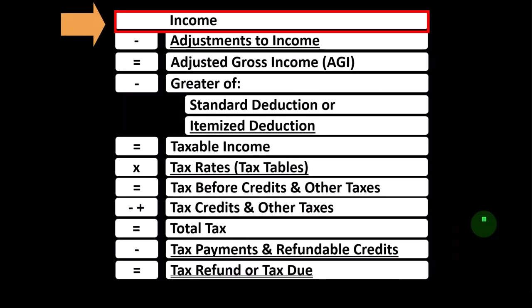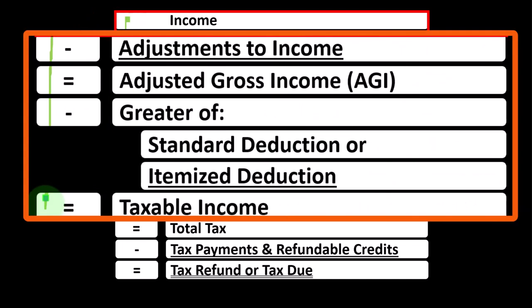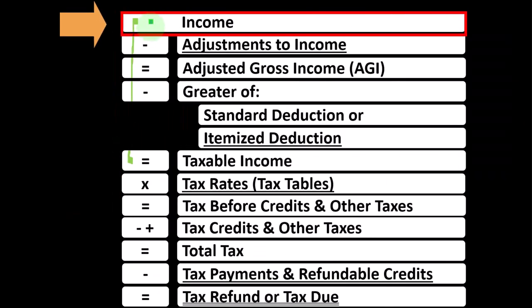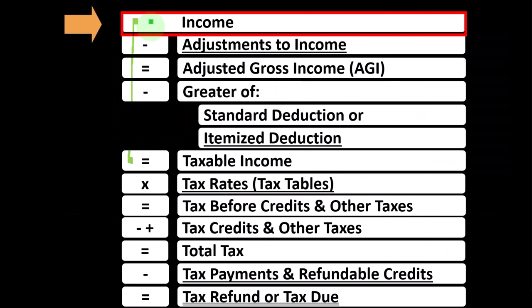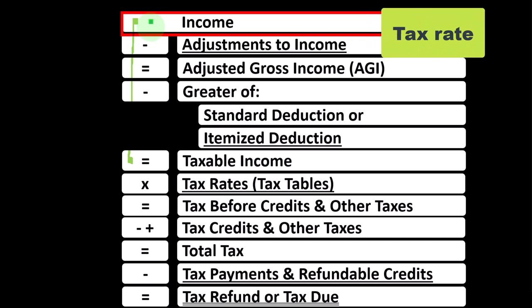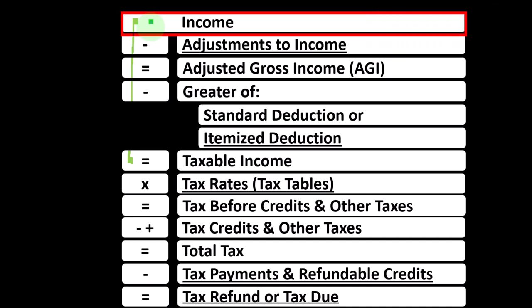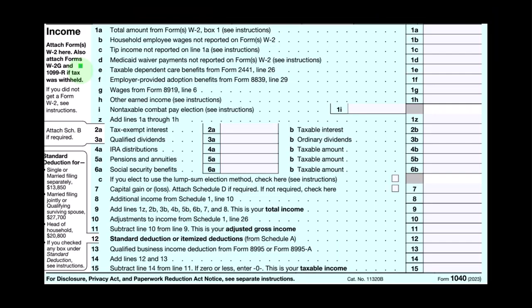Looking at the income tax formula, we're focused on Line 1 income. In the first half of the income tax formula, it's basically a funny income statement — income minus expenses resulting in net income. Here we have income minus various deductions resulting in taxable income. We typically want income to be as low as possible, looking for things that could be excluded. Some income items may have more favorable tax rates, such as qualified dividends and long-term capital gains.